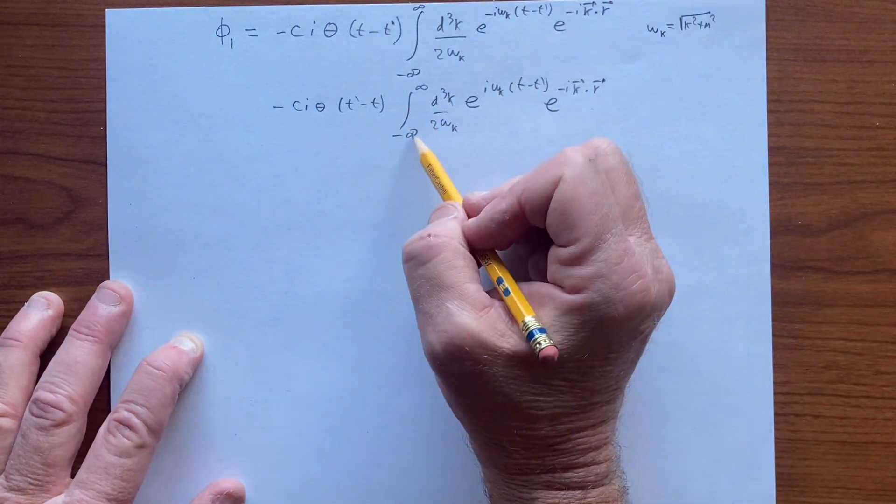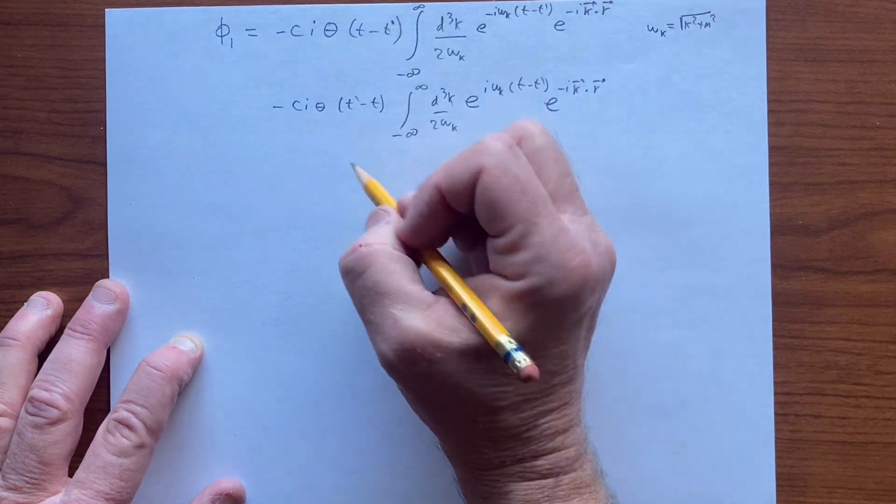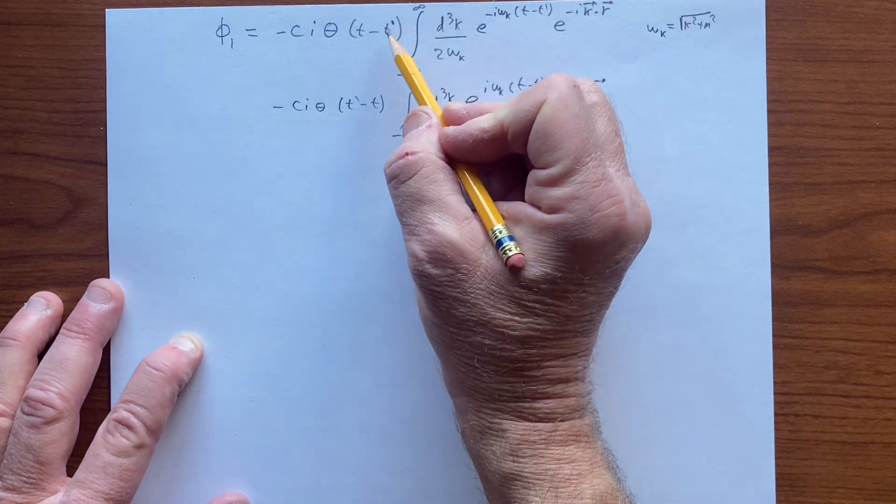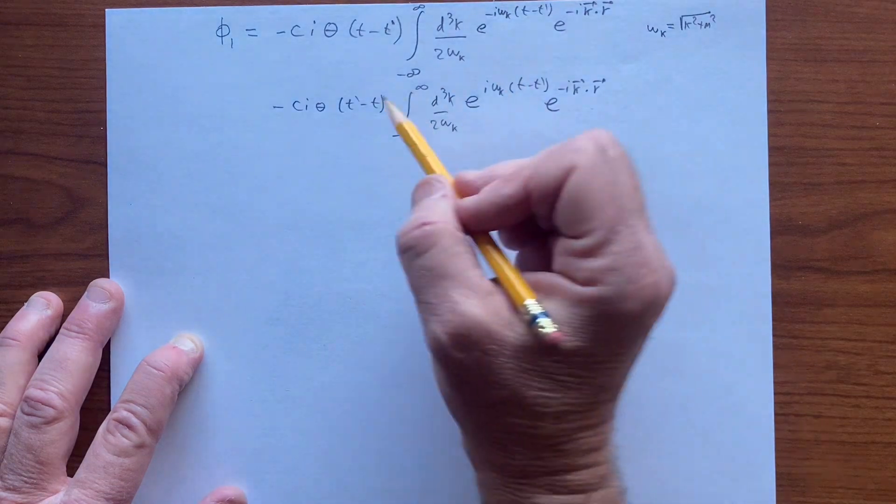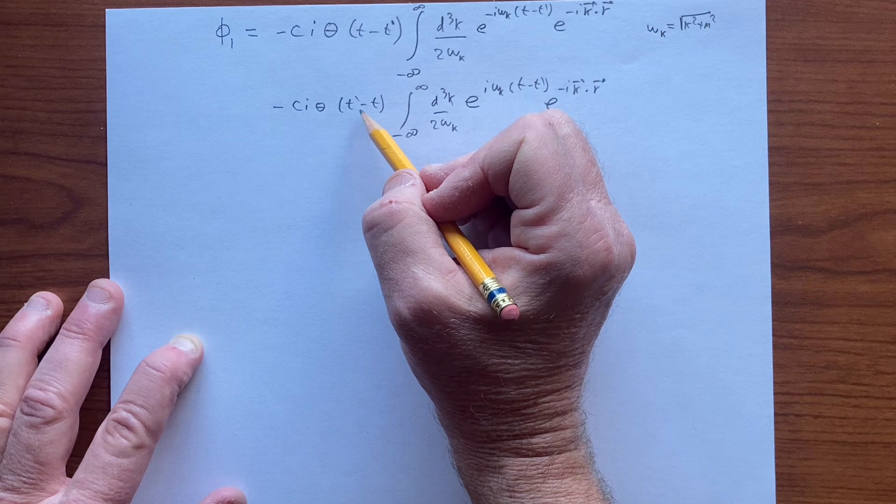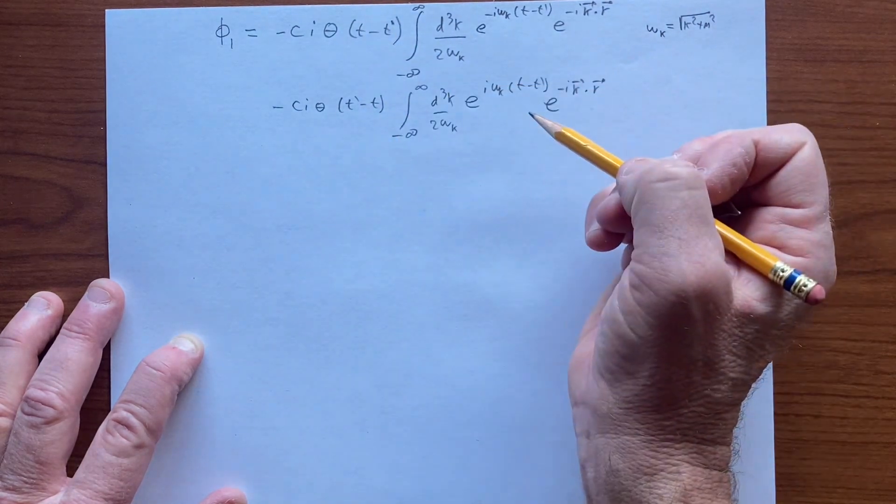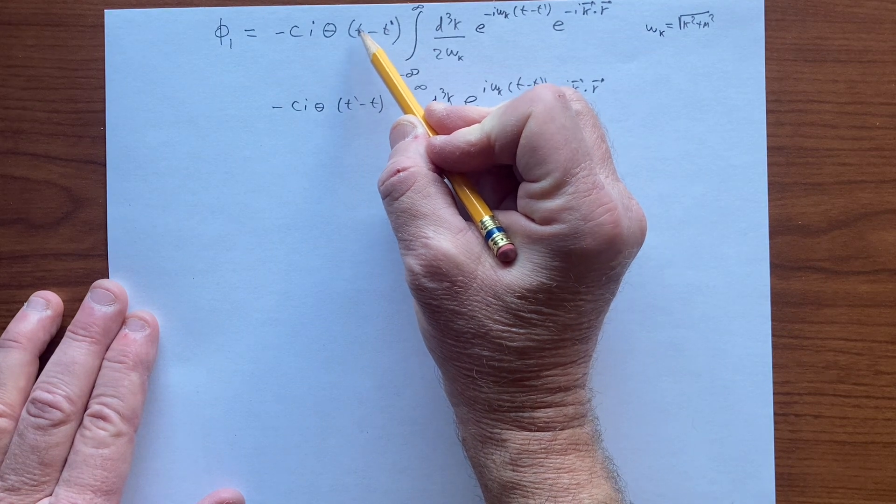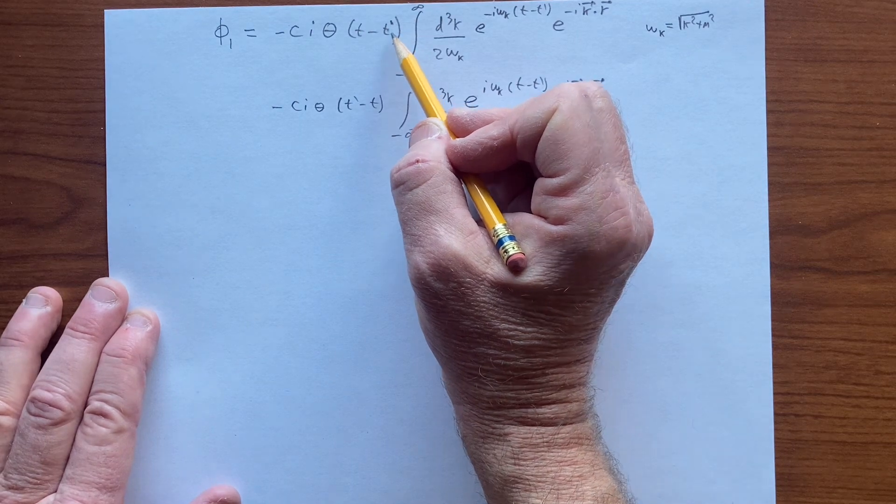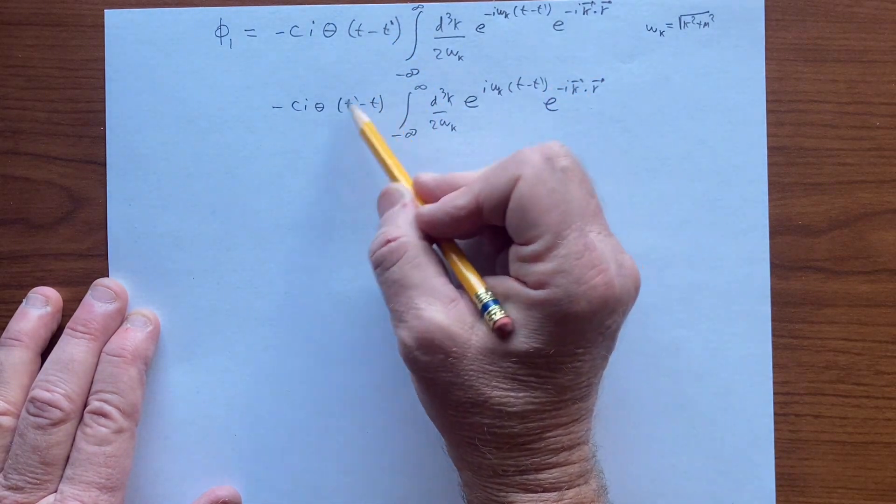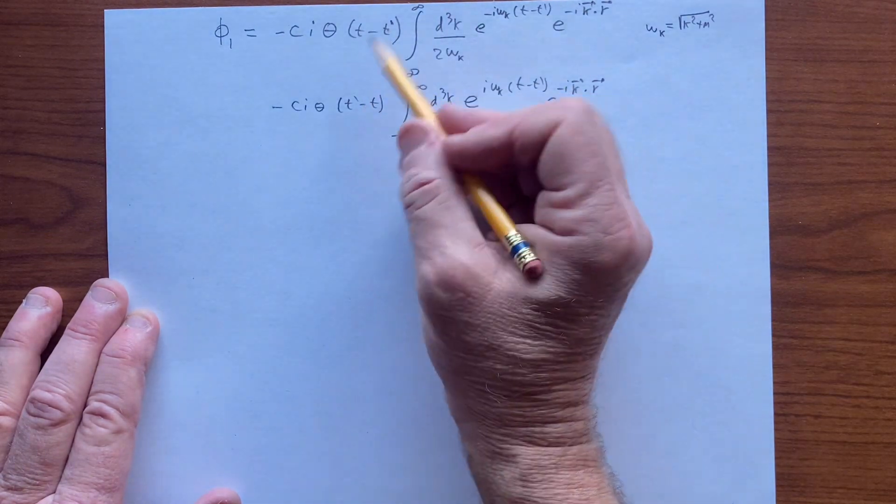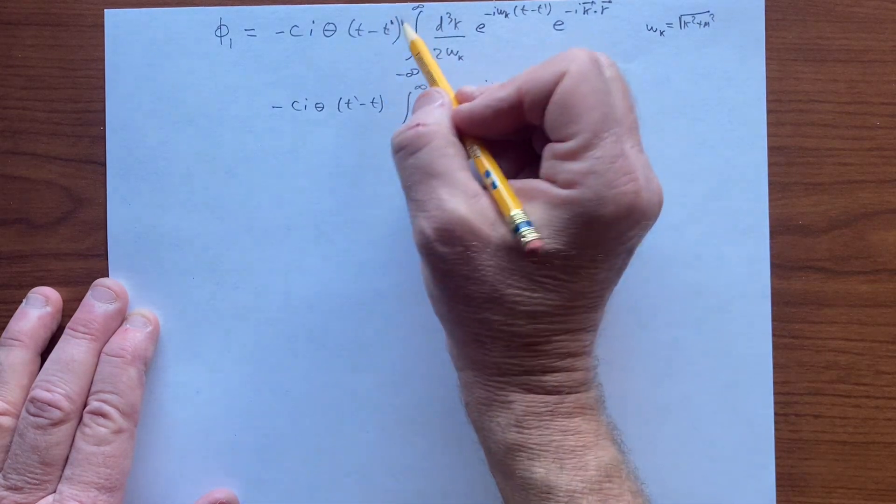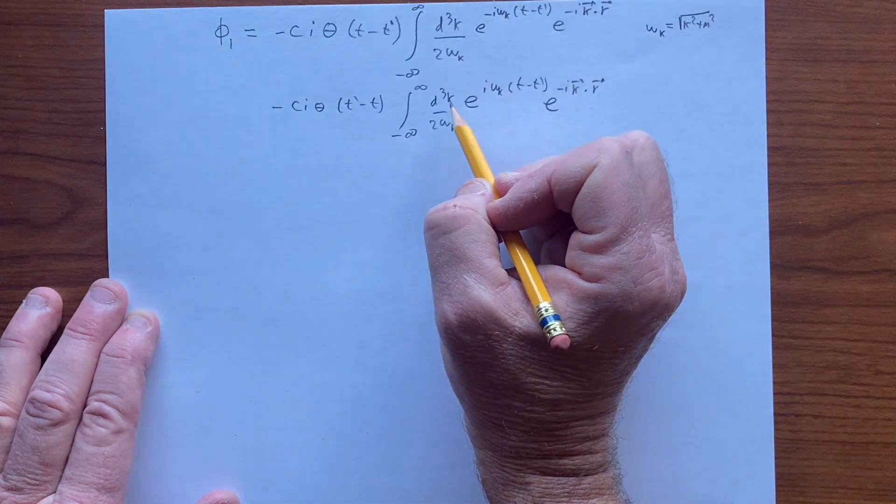And so basically we see that of these two terms, this function allows us to pick the t greater than t prime solutions. This one allows us to pick the ones where t is later and t prime is earlier, so t minus t prime is positive, whereas this one allows us to pick the ones that have just the opposite, so they allow us to pick the ones where t prime is earlier. And so we have positive energy solutions here, and here we have the negative energy solutions.